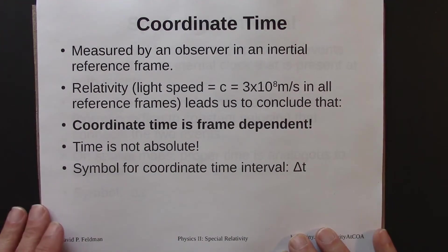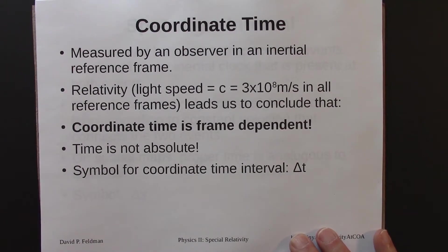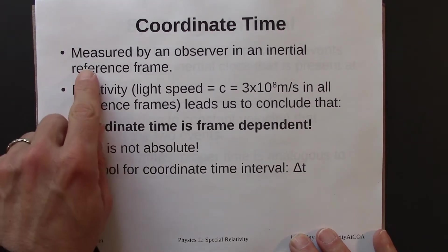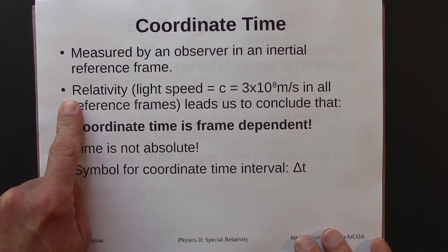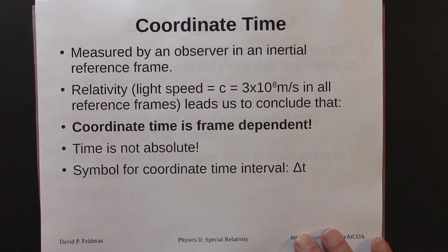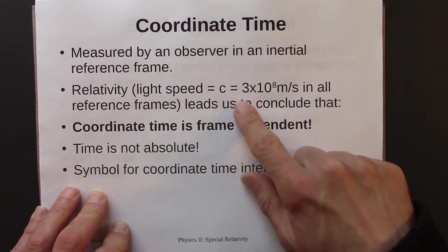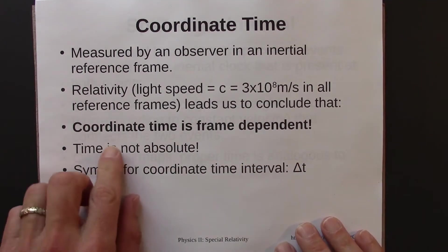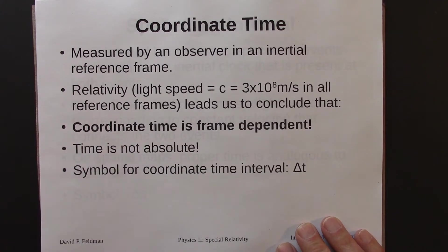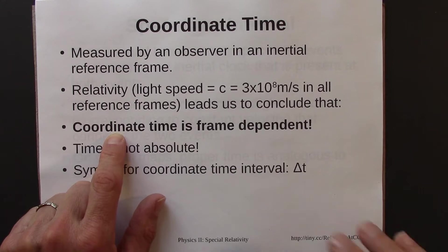Coordinate time, which we've seen before, is measured by an observer in an inertial reference frame, using a clock or a pair of synchronized clocks. In relativity, the requirement that the speed of light c — 3 times 10 to the 8 meters per second — is the same in all reference frames leads us to conclude that coordinate time is frame dependent. Observers in different reference frames will measure different coordinate time intervals.